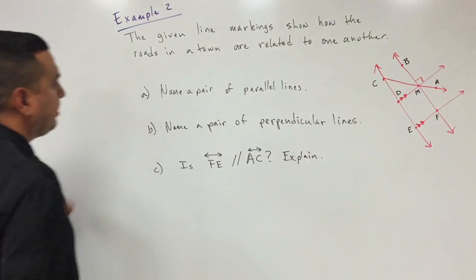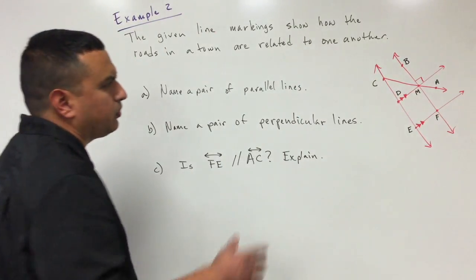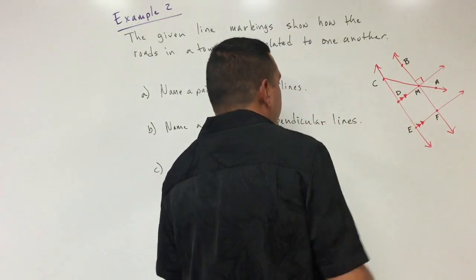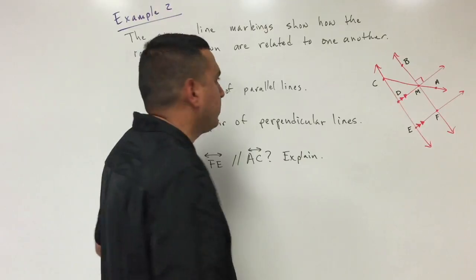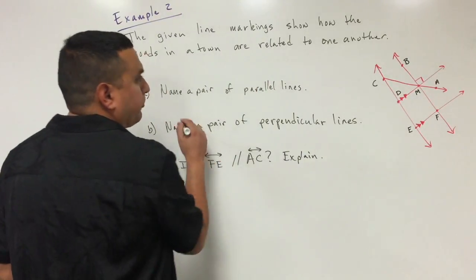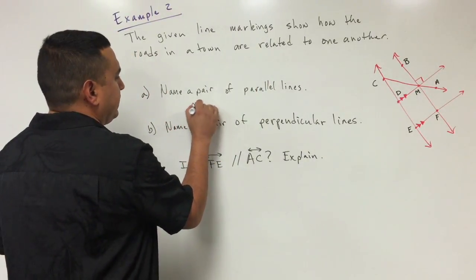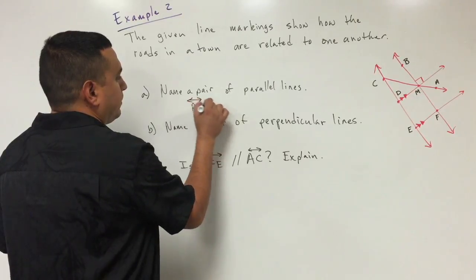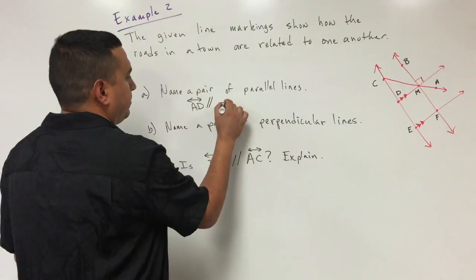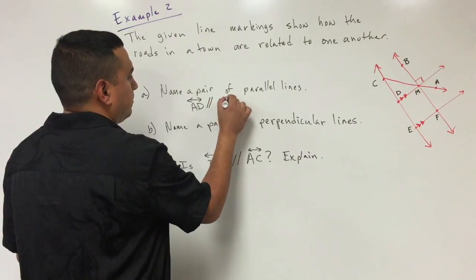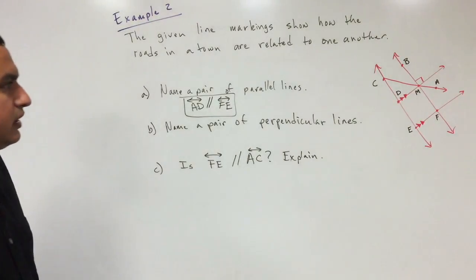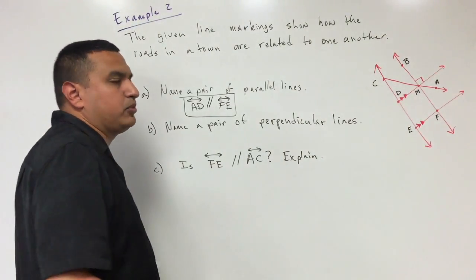For parallel lines, looking at this diagram I see these arrows — that's the symbol on the diagram that tells me those lines are parallel. So for my parallel lines I would say line AD is parallel to line FE. That's what I'm told from the diagram.